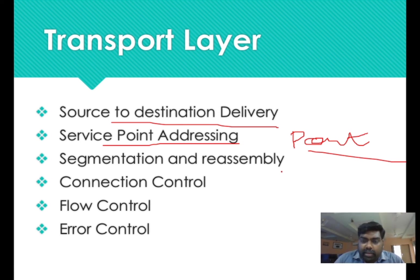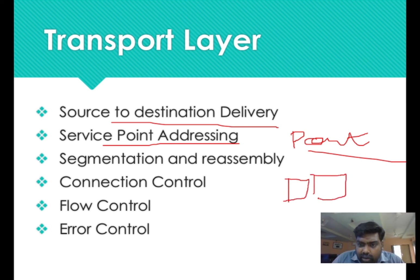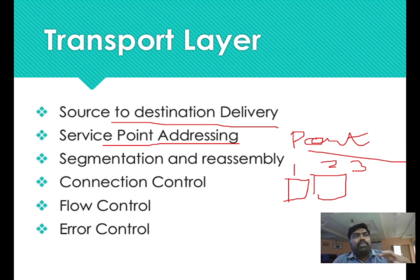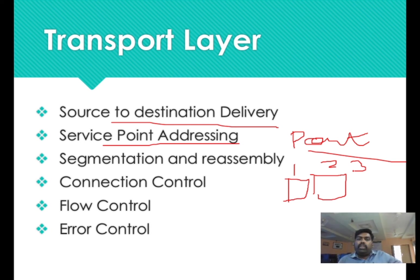If you want to do data transfer, you will receive data from source and destination. It will group and reassemble the data. It will give sequence numbers: 1, 2, 3 — sequence number. Segmentation and reassembly: it gives sequence numbers to the frames and does the segmentation. On the receiving side, the first frame, second frame, and third frame have the same sequence number. The transport layer performs segmentation and reassembly in order to support error control.